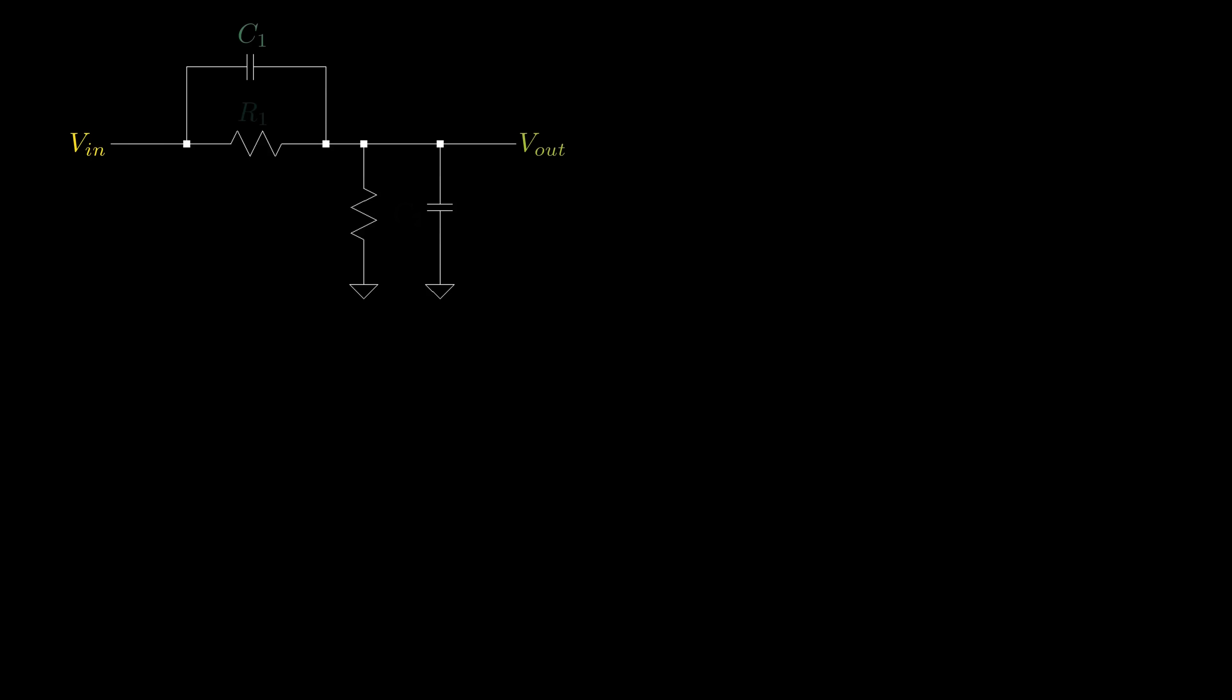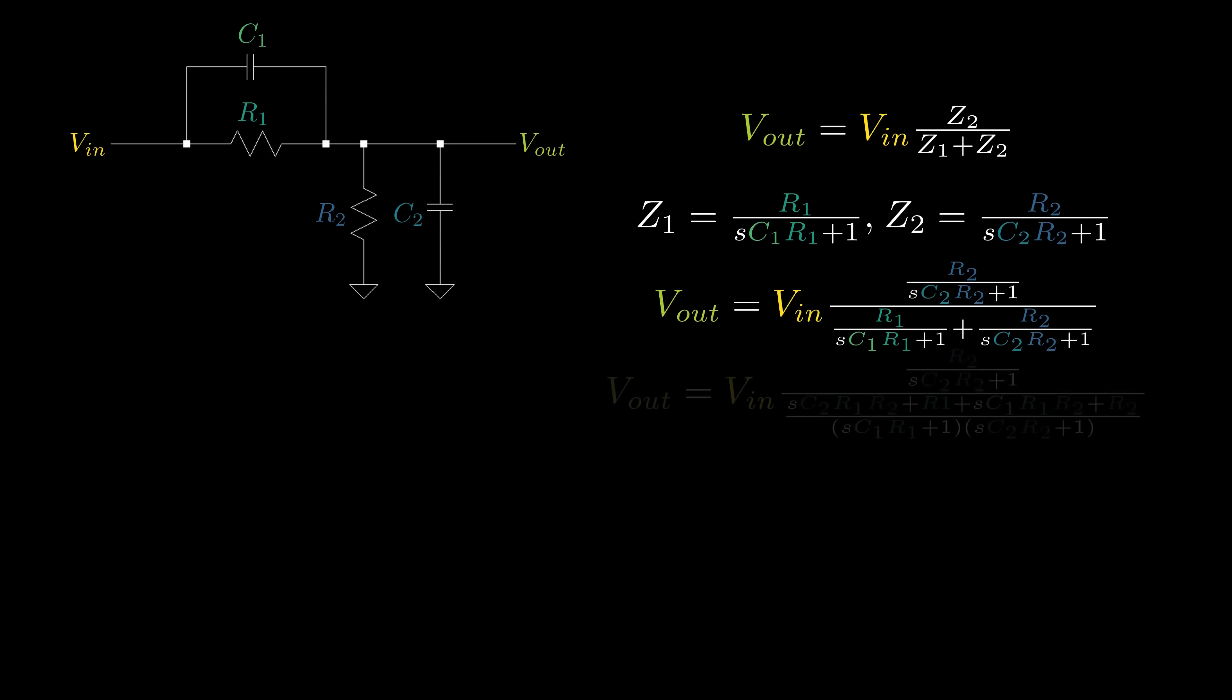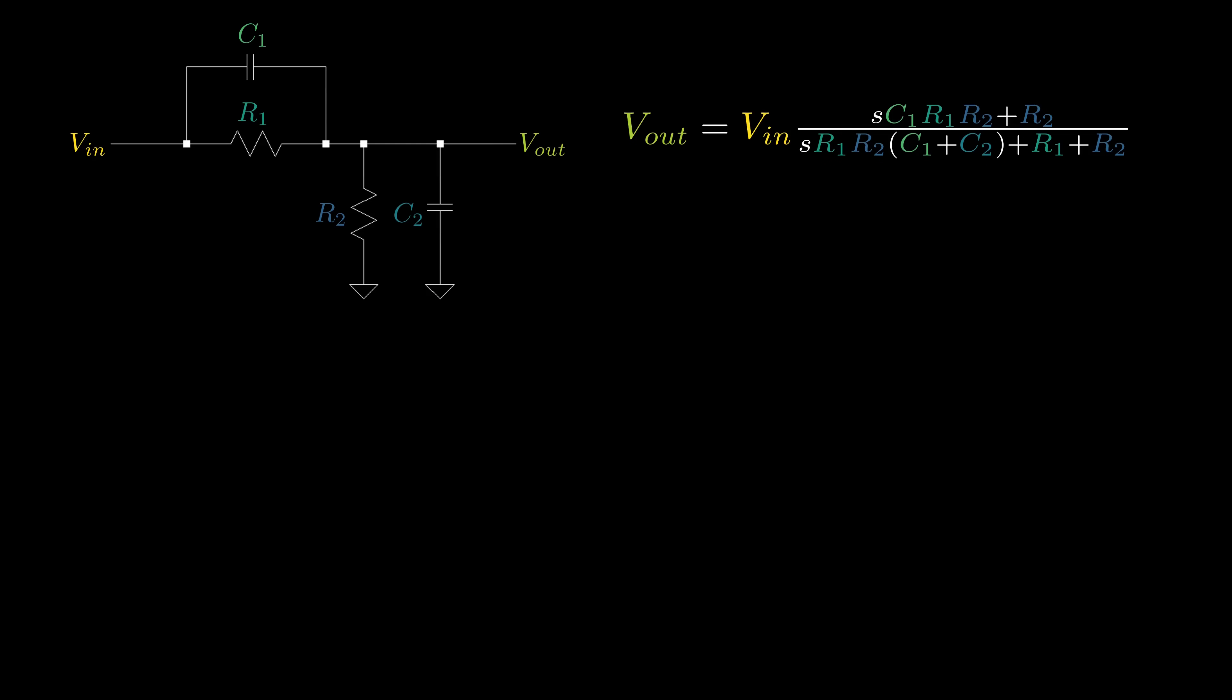Finally, let's look at the original circuit with all the elements in it. We used the voltage divider equation one last time, this time with Z1 being the parallel combination of R1 and C1, and Z2 being the parallel combination of R2 and C2. Following the algebra, we get the final result of Vout equals Vin times SC1 R1 R2 plus R2 all over SR1 R2 times C1 plus C2 plus R1 plus R2.